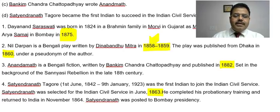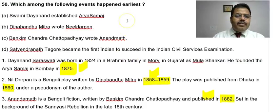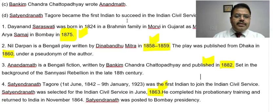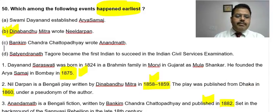So the chronological order is: Nil Darpan (1858-59), then Satyendranath Tagore's ICS selection (1863), then Arya Samaj (1875), then Anand Math (1882) — giving the order two, four, one, three. The question asks which event happened earliest, and that is option B — Nil Darpan. Therefore, the answer to this question is B.